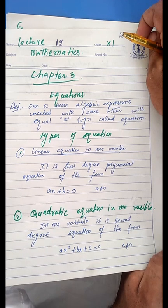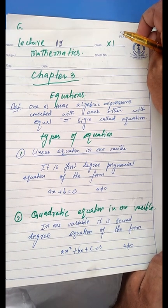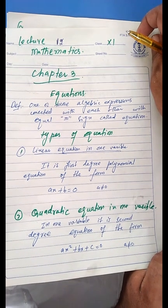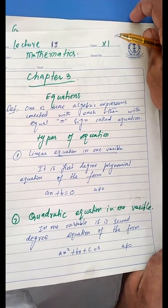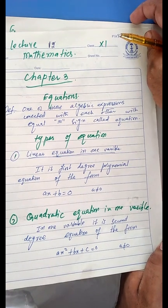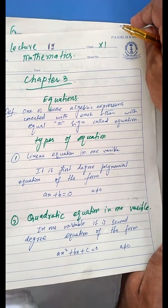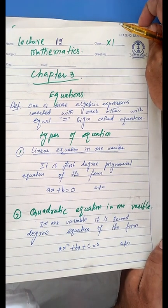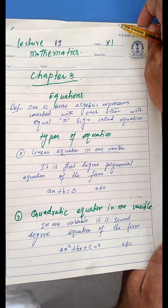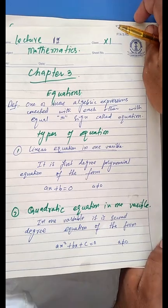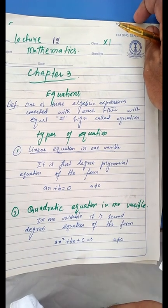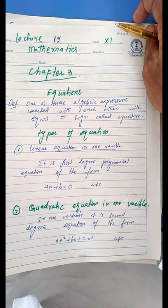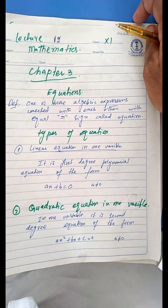For example, x minus 1 is equal to zero. This is an equation because of the equality sign and also there is a one-term algebraic expression. An algebraic expression is the collection of variables, coefficients, and powers with simple binary operations. Two or more terms also form an algebraic expression.